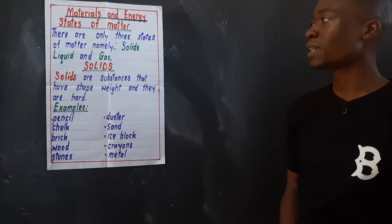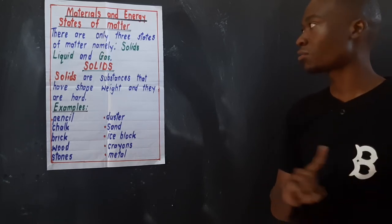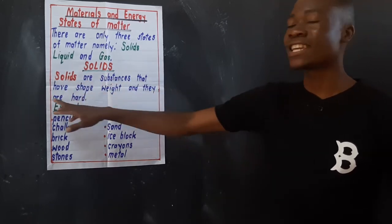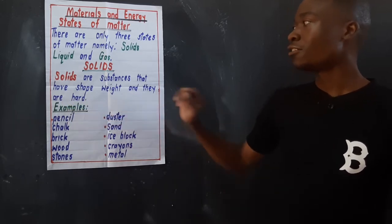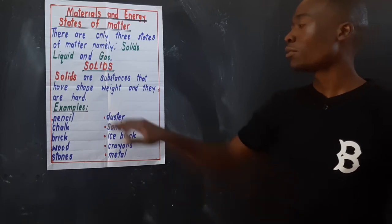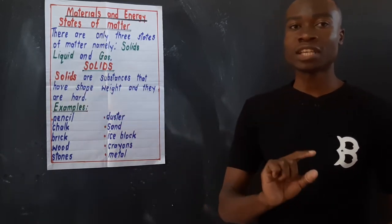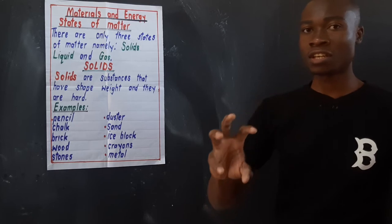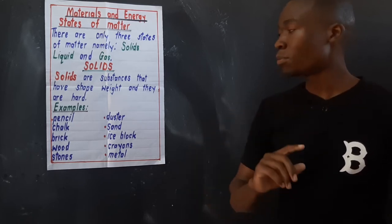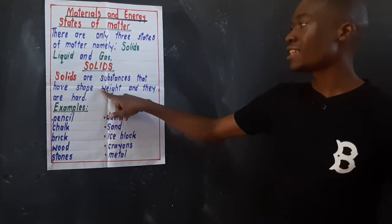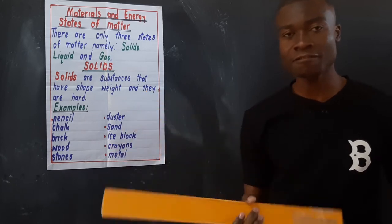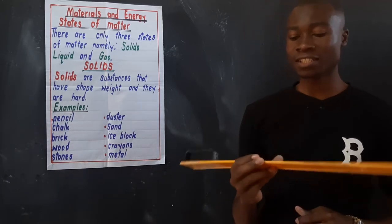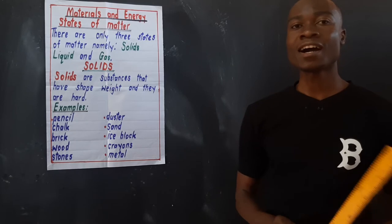Under these three states of matter, we only picked one state of matter, which is solids. So we said solids are substances that have shape, weight, and they are hard. When you say they have shape, you are able to say this object is in a rectangular, it is in a cuboid shape. Then, apart from that, they have weight — you are able to tell if this is heavy or light.